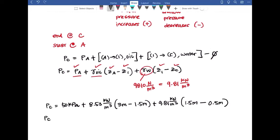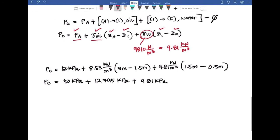So let's just do some math here. So PC is 50 kilopascals plus 12.795 kilopascals plus 9.81 kilopascals. And in case you were wondering how we got to these units, we have kilonewton per meter cubed multiplied by meter. Well that gets rid of one of our meters, so we end up with kilonewton per meter squared, and newton per meter squared is a pascal. So that's how we end up with our kilopascals. So now let's add our numbers together, and we end up with PC is equal to 72.61 kilopascals.